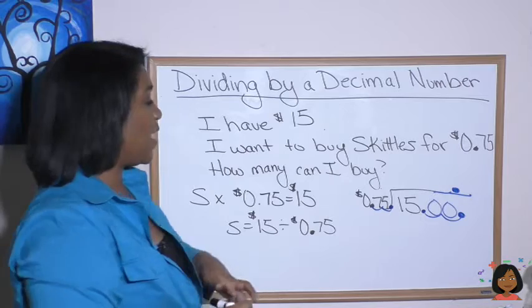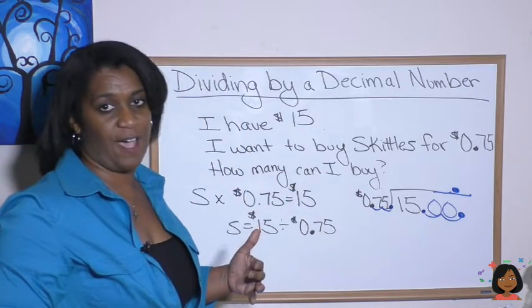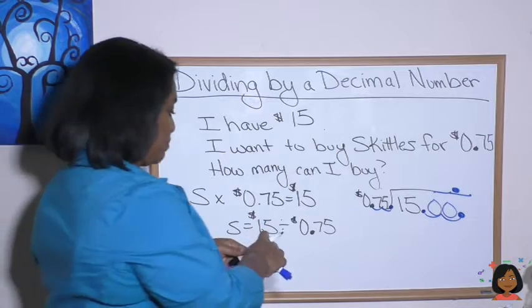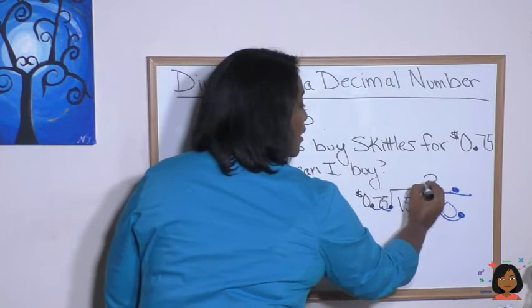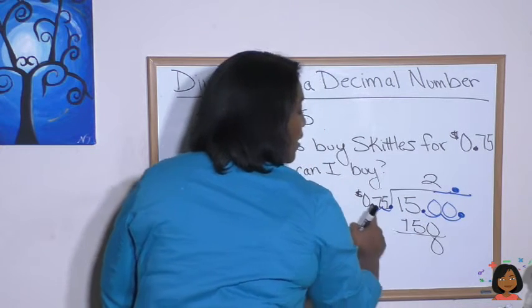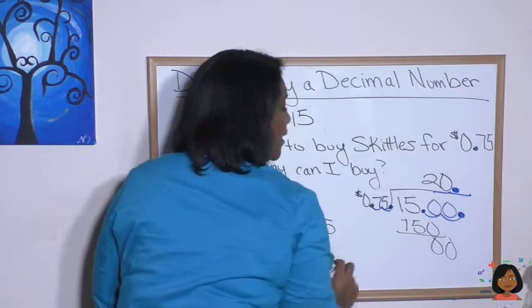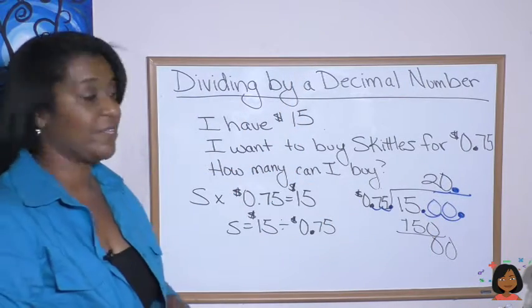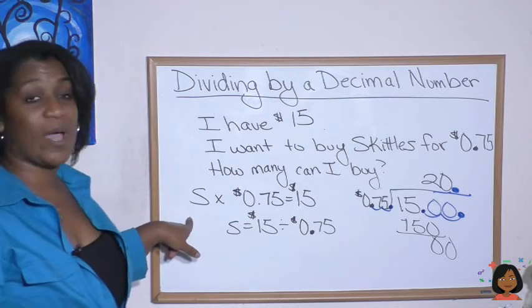And now we're going to divide. I take our 1,500 and divide it by 75. Okay. Let's do it. 75 times two is 150. That gives us a zero. And 75 into zero is zero. So that means that 20 is our answer. How many Skittles can we buy? We can buy 20 Skittles.